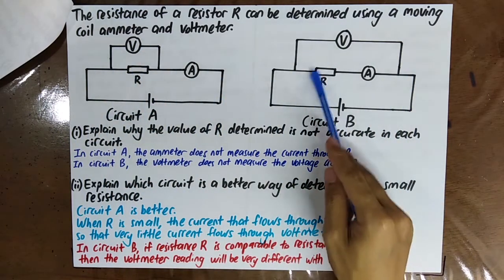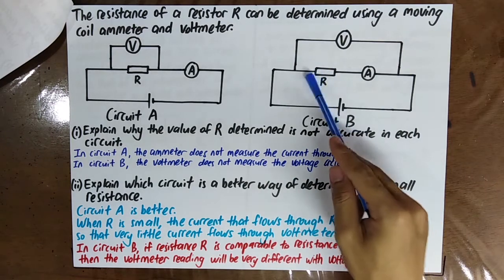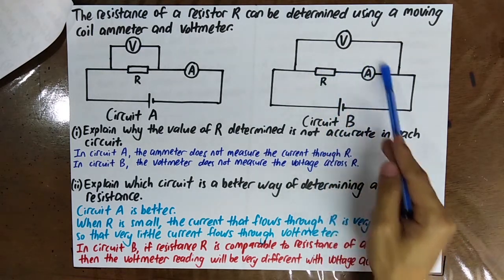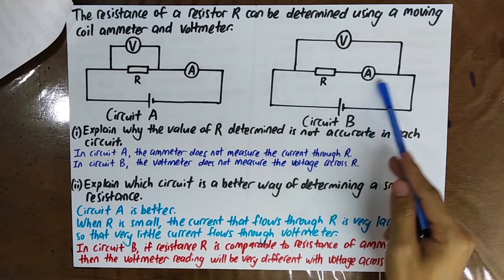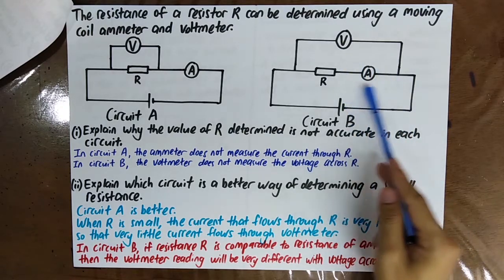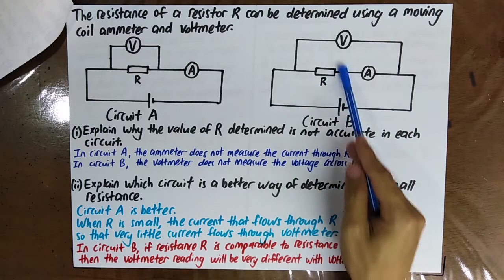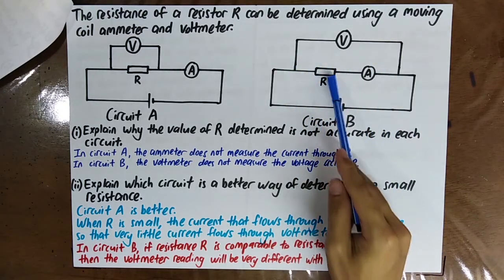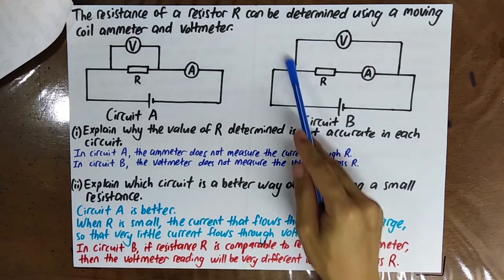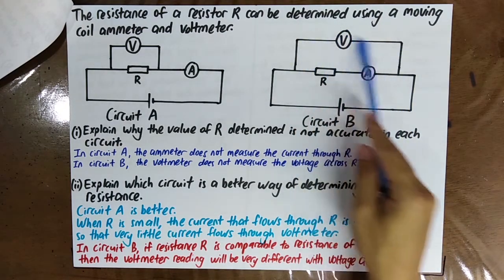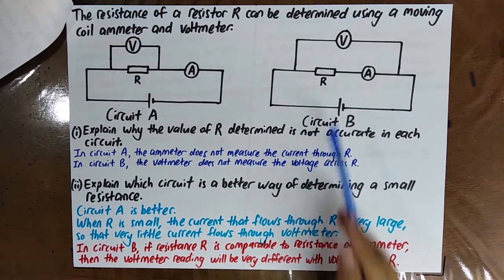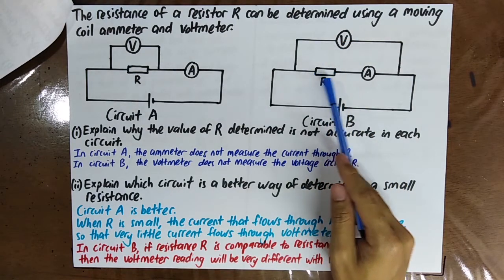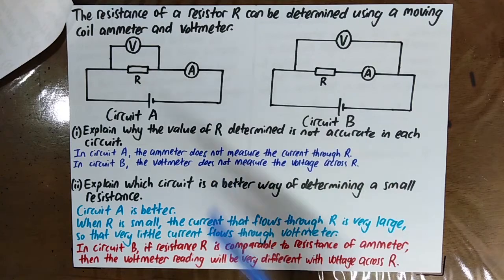In circuit B, when R is very small, the potential difference across the ammeter will be quite large compared to the potential difference across the resistor. So in circuit B, if R is very small, the reading of the voltmeter is very inaccurate because the voltmeter reads the potential difference across both R and the ammeter.